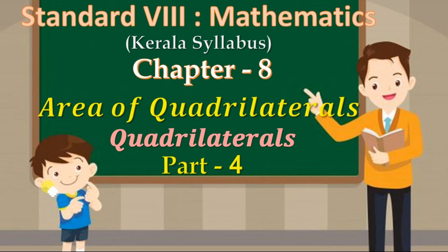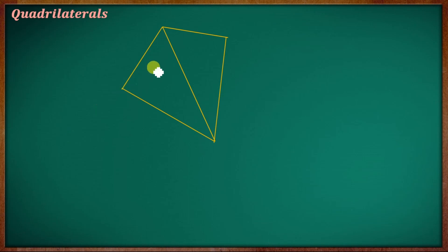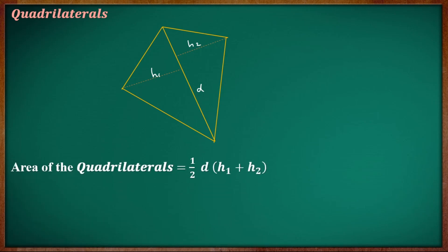The area of a quadrilateral: this is the quadrilateral. This is the perpendicular line. The height is H1 and this is H2. The area of a quadrilateral is equal to 1/2 into D into (H1 + H2).